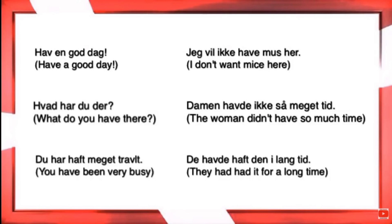'Jeg vil ikke have mus her.' 'Vil' is present tense here — another verb — so 'have' must be infinitive. 'Jeg vil ikke have mus her' — I don't want mice here. In real life, we rarely say 'have' fully; that's just dictionary pronunciation. It's also what you'd use for 'to have,' like 'det er godt at have' — it's good to have. I know a lot of you are annoyed that we pronounce it like 'ha.' In song lyrics we write H-A with an apostrophe, but that's not correct.